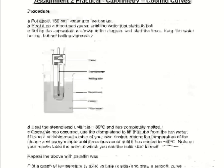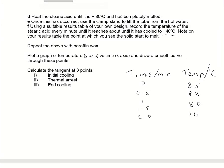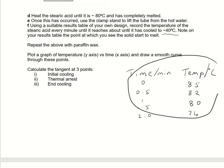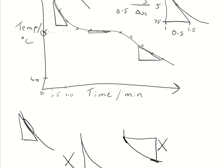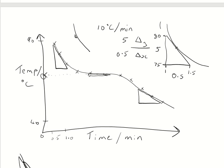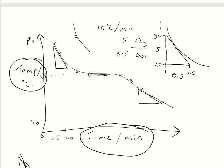That is it for the Assignment 2 practical. To summarise: first, you need a table — make sure to include labels. When drawing the graph, check the specification: you need axes with units, sensible scales so your graph covers at least half the paper (do not have everything bunched up at the bottom), and then gradients taken at three points — the initial cooling, the plateau, and the end cooling.